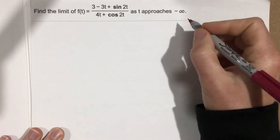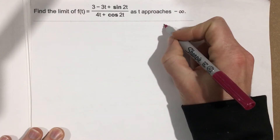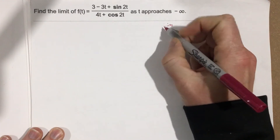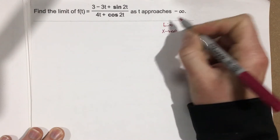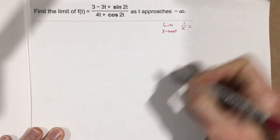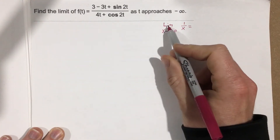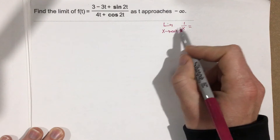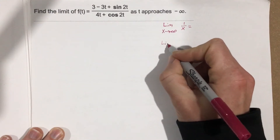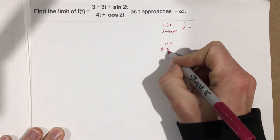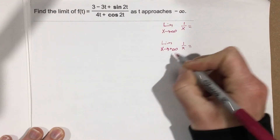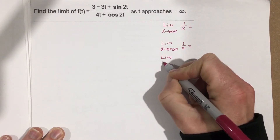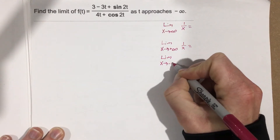The first thing we want to look at is the limit as x approaches infinity for 1 over x. What does that equal? In order to find this, we need to look at the limit as x approaches positive infinity for 1 over x, and the limit as x approaches negative infinity for 1 over x.